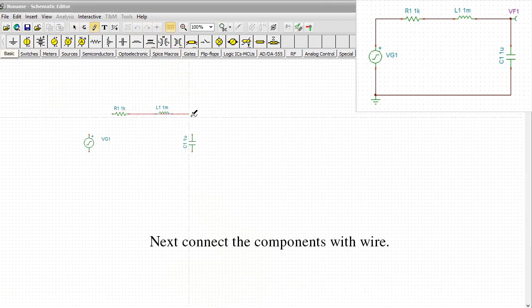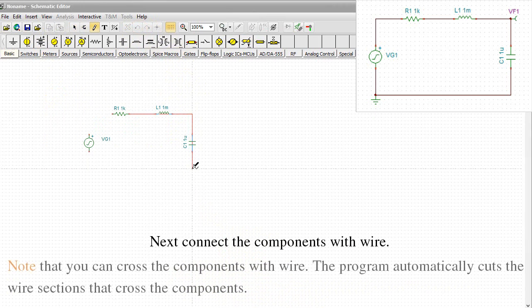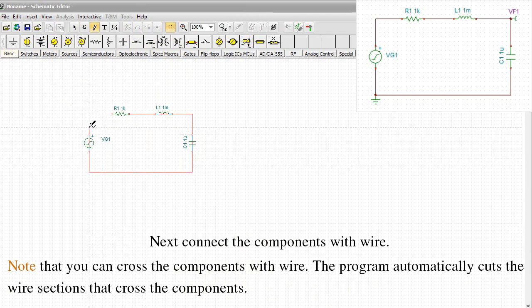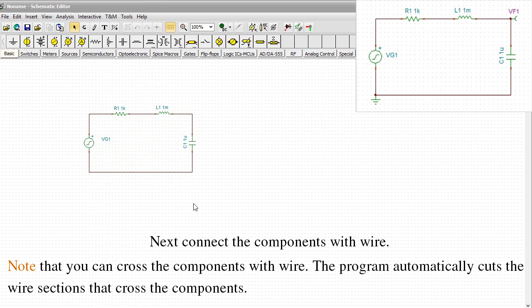Next, connect the components with wire. Note that you can cross the components with wire. The program automatically cuts the wire sections that cross the components.